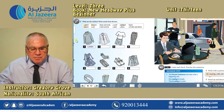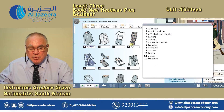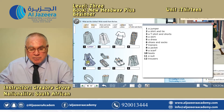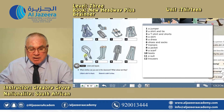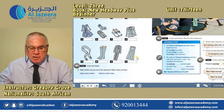When you've completed, let's check the answers. We have a jumper, a shirt and tie, a t-shirt and shorts, a skirt, a dress, shoes and socks, trainers, and a jacket. Here we have a scarf, boots, a suit, and trousers. Do you get them? Good. Make sure you've completed all of the boxes and written in the item of clothing before we move along.